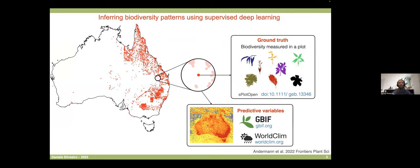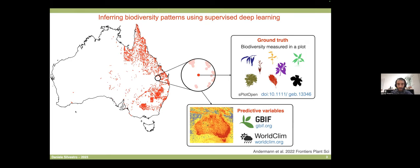Here we look at present-day biodiversity. Specifically, we look at plots where all species were recorded by scientists, available in a database. These red dots map the distribution of plots where we know every single species of plant. You can see these plots are numerous but biased in their geographic distribution and don't span the entire Australian continent. Meanwhile, we have datasets that do span Australia and have a global distribution — for example, the GBIF occurrence data.